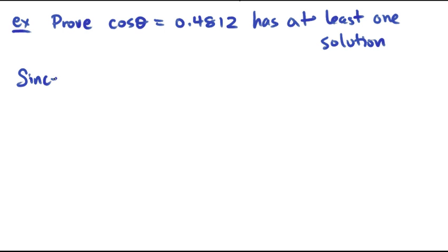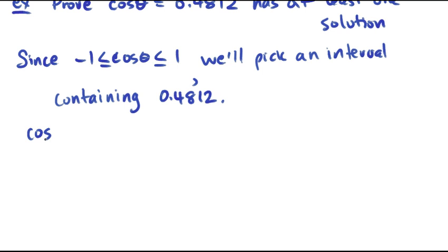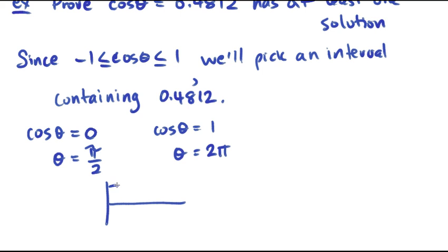Here's how you could go about doing that. Since the cosine function is always between -1 and 1, we'll just pick an interval containing our solution 0.4812. We know for instance that cos θ is 0 when θ = π/2 and we know that cos θ is 1 when θ = 2π from the cosine graph. So it's 0 here and it's 2π here.